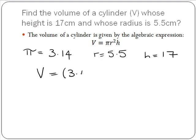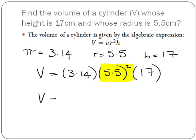So V equals 3.14 multiplied by 5.5 squared multiplied by 17. Now the first thing you must do in this formula is you must square the 5.5. We know this from our order of operations. So when we square the 5.5 we get 3.14 to be multiplied by 30.25 to be multiplied by 17.